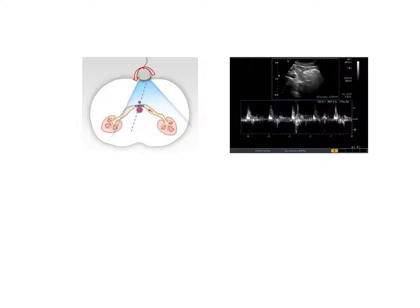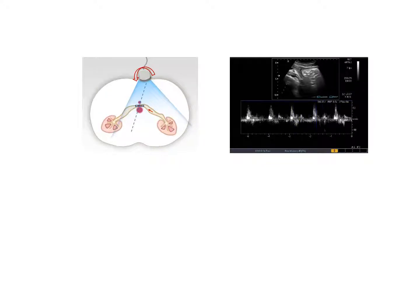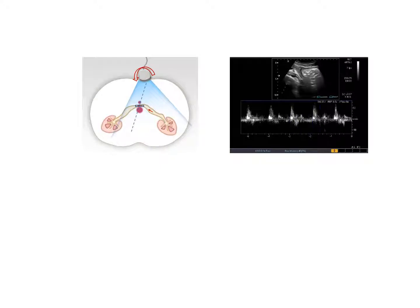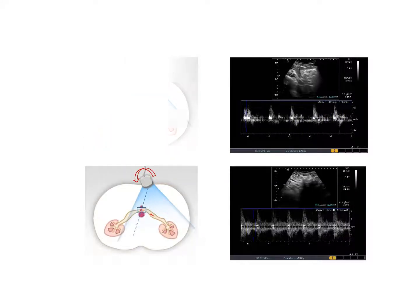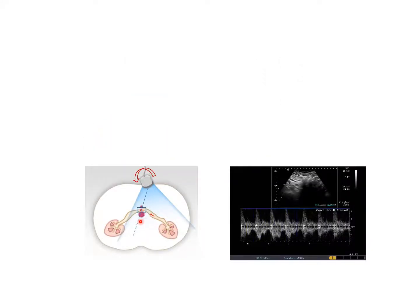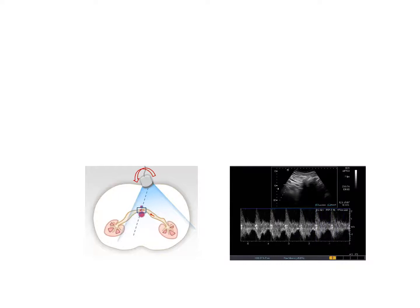But still, it is difficult to get clear spectra because the left renal vein between the pulsating aorta and the superior mesenteric artery is moving in and outside of the sample volume. If we make the sample volume bigger, now we can get clear spectra because the left renal vein between the pulsating arteries stays within the wide sample volume.